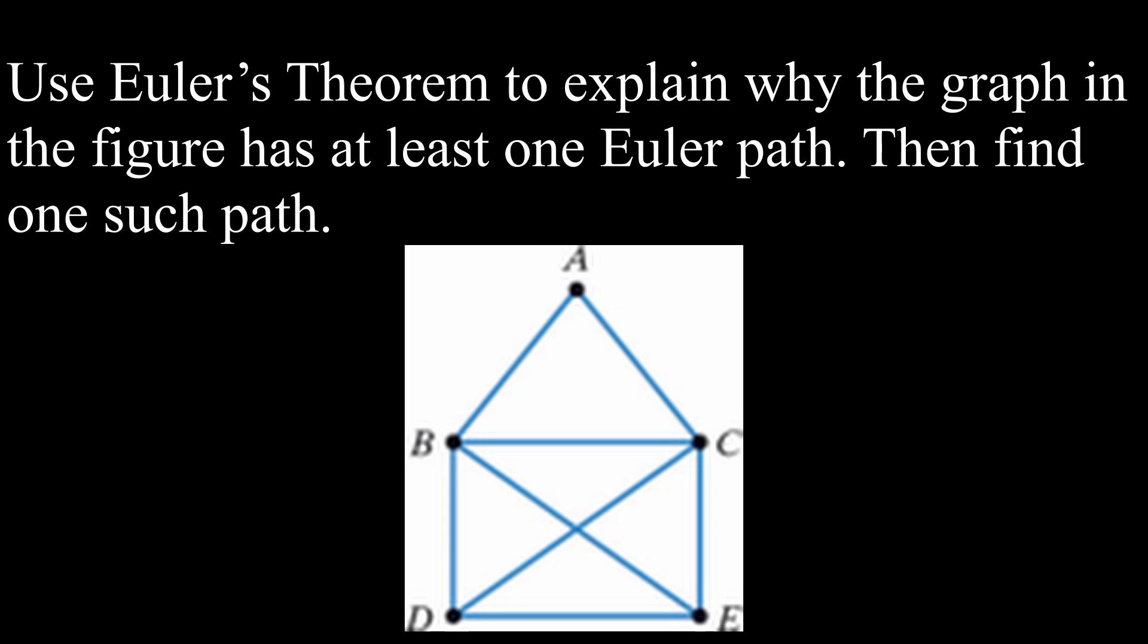For our second example, we want to use Euler's Theorem to explain why the graph we have given has at least one Euler path, then find a potential Euler path.